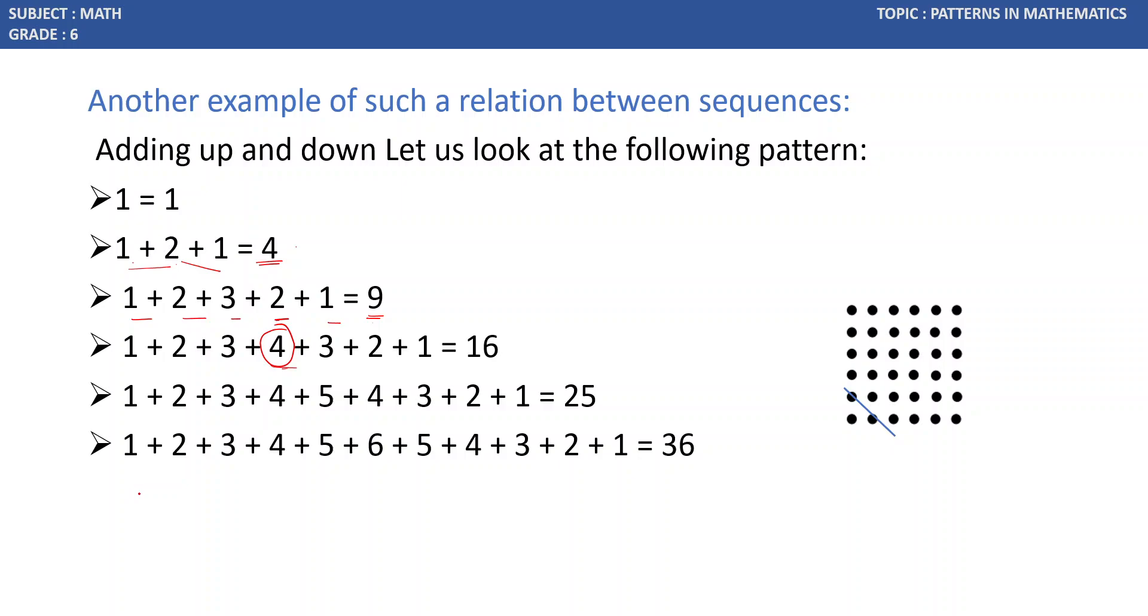In this example, we will get 1 plus 2 plus up to 10, then in descending order. Then the answer will be 10 squared, which is 100. This pattern representation is like this: 1, 2, 1. If we add like this, it is in the form of a square. Next, if we consider 3 as the middle one: 1, 2, 3, 2, 1. Again, this is 9, which is the third sequence.